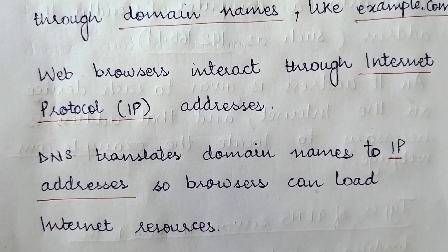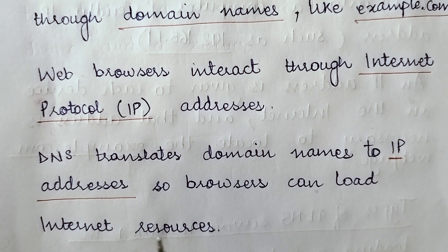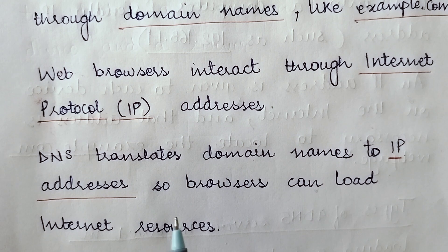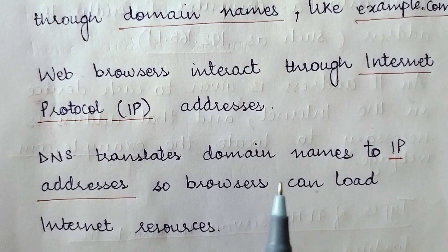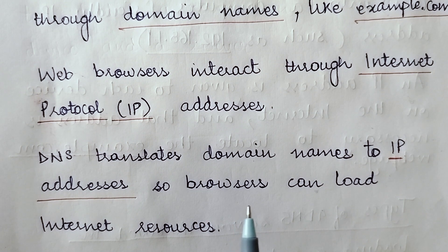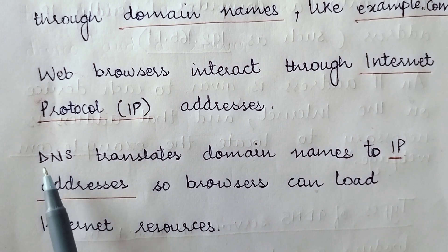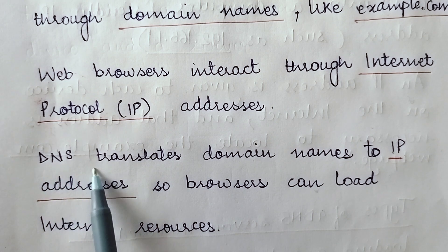When we identify a particular website through its domain name and the web browser identifies the same website through the IP address, then how are both compatible? Here comes the role of a translator — just like one person knows French and the other knows English, so in between you need a translator who knows both. Similarly, there comes the need for a translator, and this translator is your domain name system or DNS.